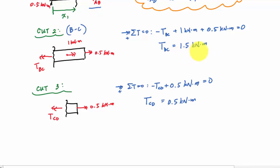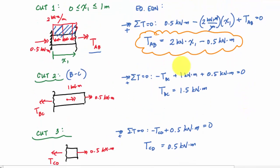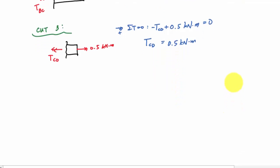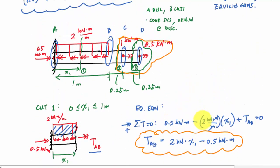Now we can draw the internal torque diagram. The internal torque in segment AB is described by the linear equation TAB = 2x₁ − 0.5 kN·m. In segment BC, the internal torque is constant at 1.5 kilonewton meters. In segment CD, it is also constant at 0.5 kilonewton meters.